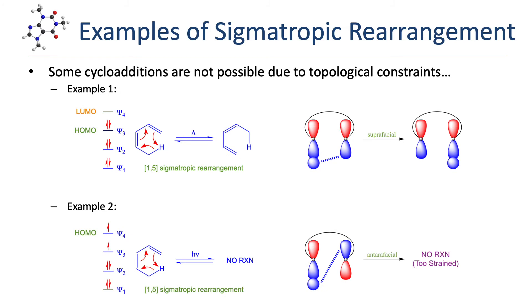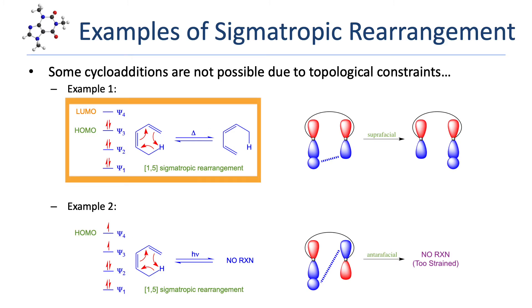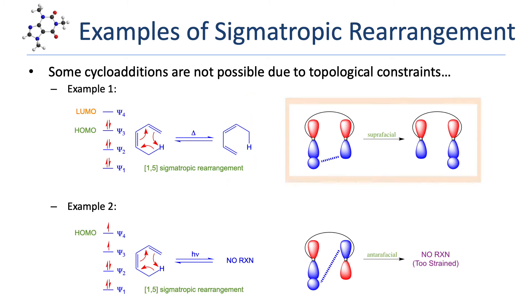In the first example, we see 1,3-pentadiene undergo a 1,5-sigmatropic rearrangement under thermal conditions. Under thermal conditions, the molecule is in the ground state. The mechanism involves movement of three pairs of electrons — two pi pairs and one sigma pair — meaning psi-1, psi-2, and psi-3 are filled, which makes psi-3 the HOMO. Psi-3 is an odd-numbered pi molecular orbital, which means it's symmetric. We can see that the reaction will occur with suprafacial topology, easily achieved in a six-atom cyclic transition state, so the reaction succeeds.